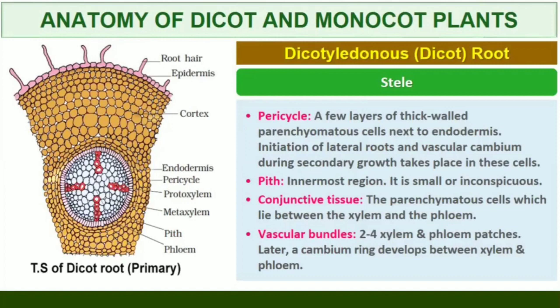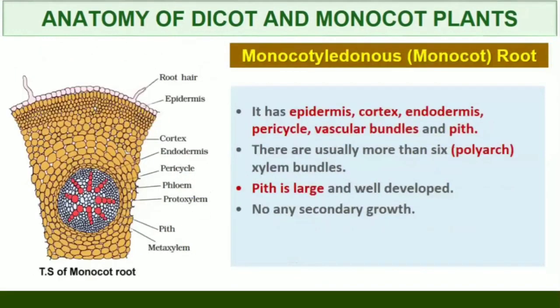All tissues on the inner side of the endodermis, such as pericycle, vascular bundles, and pith, constitute the stele. The anatomy of the monocot root is similar to the dicot root in many respects. It has epidermis, cortex, endodermis, pericycle, vascular bundles, and pith. Compared to the dicot root which has fewer xylem bundles, there are usually more than six polyarch xylem bundles in the monocot root. Pith is large and well developed. Monocotyledonous roots do not undergo any secondary growth.